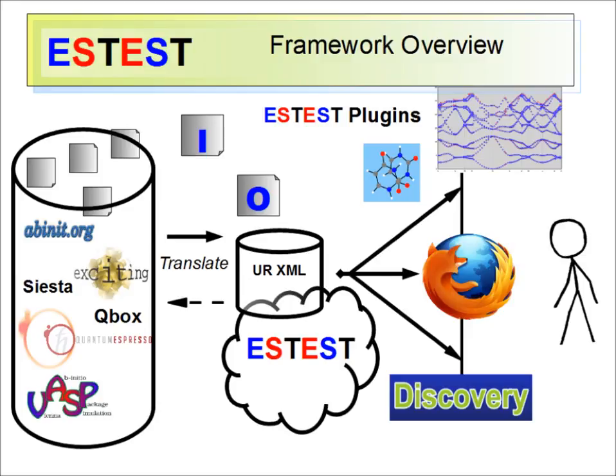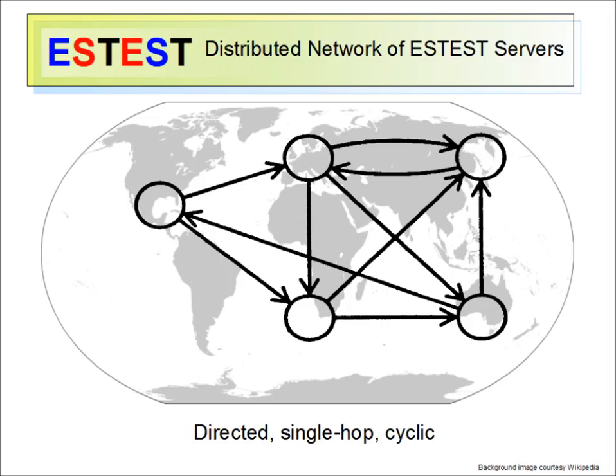I'll talk more about plugins and discovery later, but everything described so far covers just a single ES test server. Now let's talk about what we gain by hosting many ES test servers around the world and networking them together so they can exchange information. The ES test network is modeled by a directed graph that allows cycles, but communication between nodes is restricted on a single edge between its nearest neighbors.